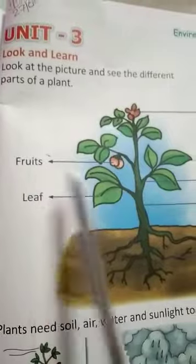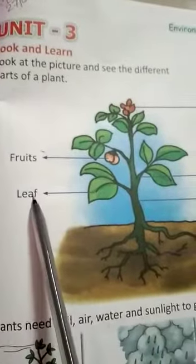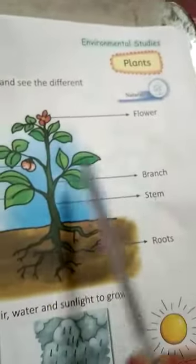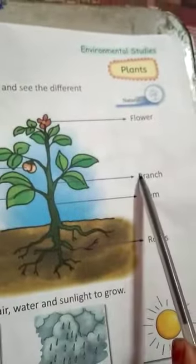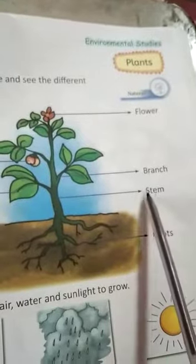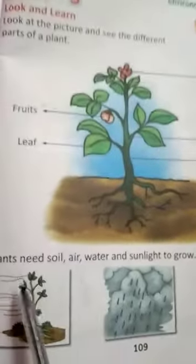The different parts of a plant are: Fruits, Leaf, Flower, Branch, Stem, and Roots.